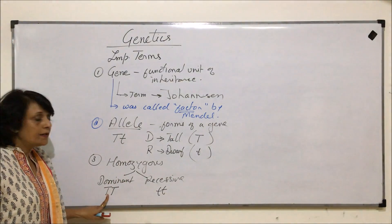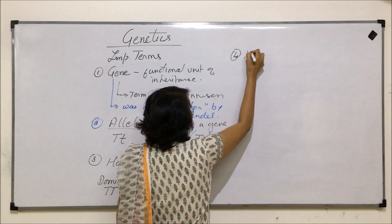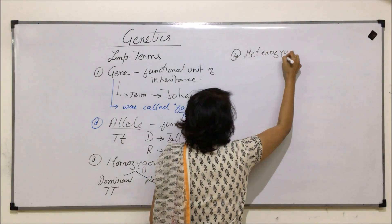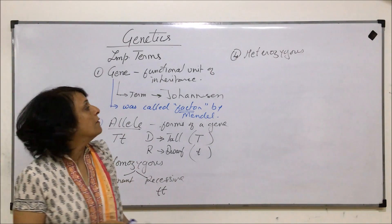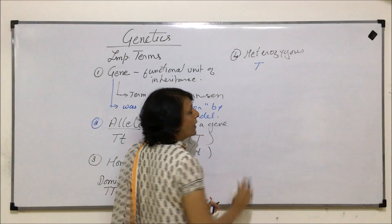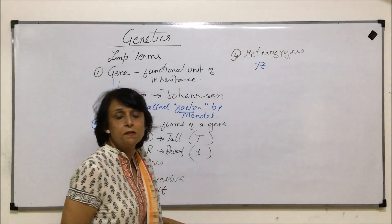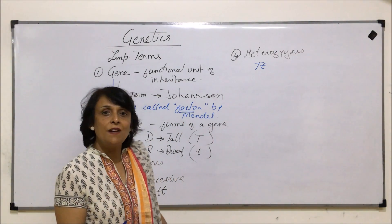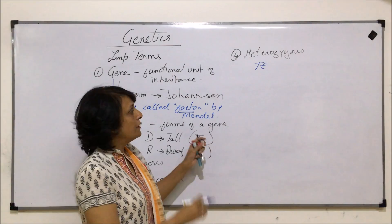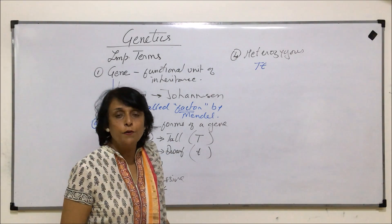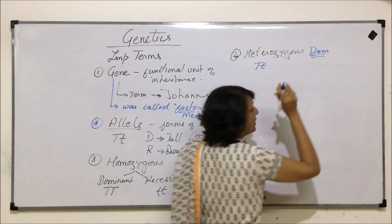If one allele is dominant and the other is recessive, the term we use is heterozygous. When we talk of heterozygous, we don't have to specify dominant or recessive because heterozygous means one allele is dominant and the other is recessive. When there is one dominant and one recessive, invariably the plant is going to be tall, so we simply call it heterozygous, or if we want to be specific, heterozygous dominant.